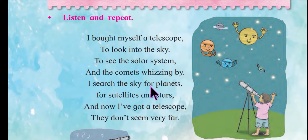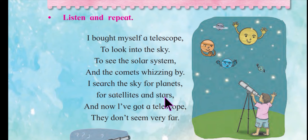He searches for planets, and also for satellites and stars. What is a satellite? A satellite is an electronic device sent into space that moves around the Earth or another planet for a particular purpose. And what are stars? A star is a large ball of burning gas in outer space that you see as a small point of light in the sky at night — in Hindi, a tara or sitara.